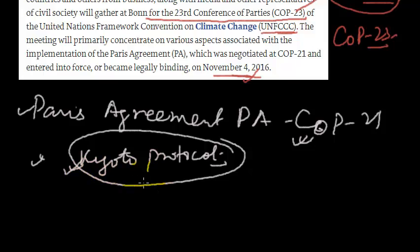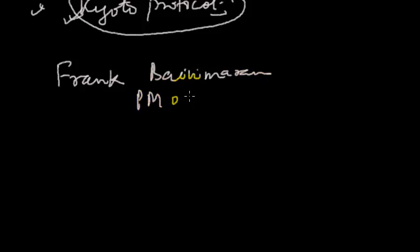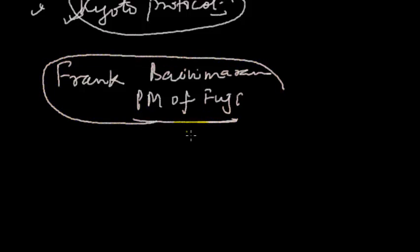COP-23 will be presided by Frank Bainimarama, the Prime Minister of Fiji. Fiji is one of those countries which will submerge if there is a rise in sea level, where much more disaster is going to come. It is fitting that a Pacific island nation chairs this year's Conference of Parties, as the very existence of low-lying islands of Fiji is threatened by sea level rise due to climate change.